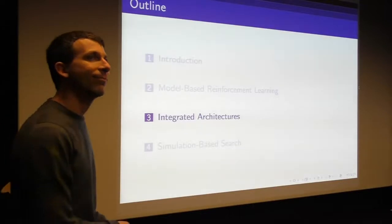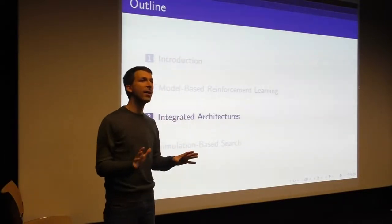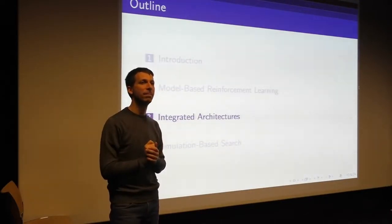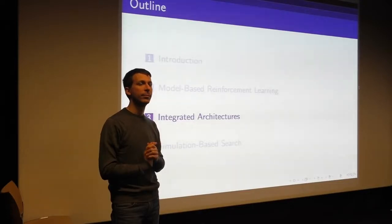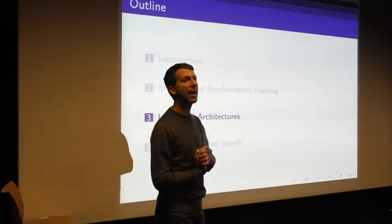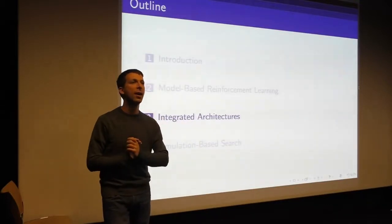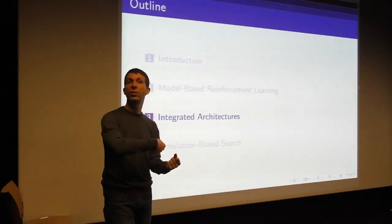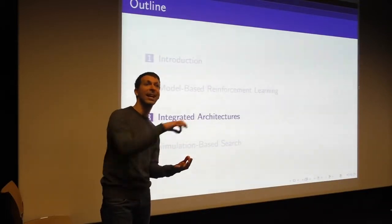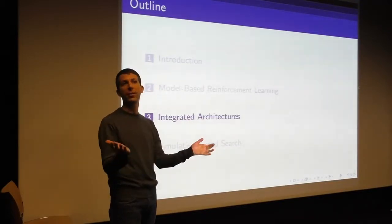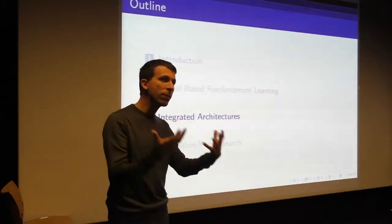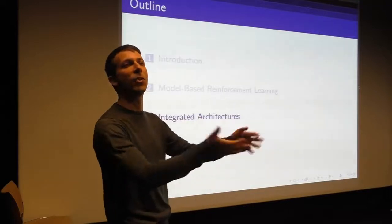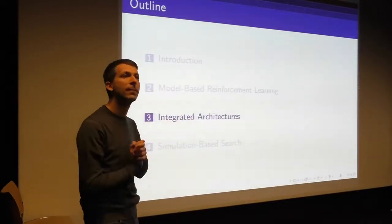Can this be extended to continuous state and actions? Yes, absolutely. Everything said so far applies, except that you can't apply table lookup methods — you need some way to generalize across states and actions because you'll never revisit exactly the same state and take exactly the same action again in continuous spaces. So all of these model learning approaches normally involve function approximation, such as a neural network representing your transition model.